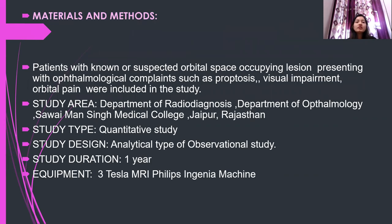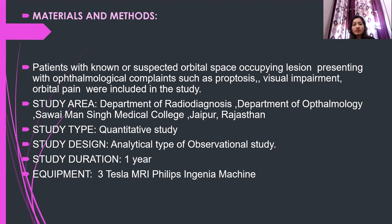Materials and methods. Patients with known or suspected orbital space-occupying lesions presenting with ophthalmological complaints such as proptosis and visual impairment were included. The study area was the Department of Radio Diagnosis and Department of Ophthalmology, Sawai Mansingh Medical College, Jaipur, Rajasthan. Study type was quantitative; design was an analytical observational study. Duration was one year. Equipment used was a 3 Tesla MRI Philips machine.